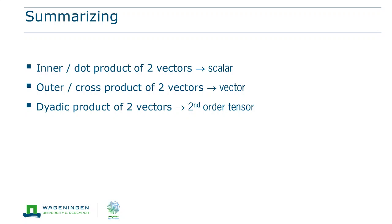Finally, we have the dyadic product of two vectors. This is either indicated with a cross in a circle or without any operator. The dyadic product yields a second-order tensor. Hence, an alternative name is the tensor product.